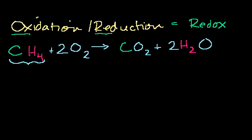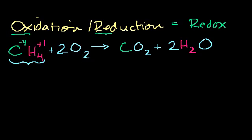So if carbon is the electron hog and hydrogen is having its electrons taken away — remember, this is all hypothetical, more of a partial reality — hydrogen is going to lose one electron each. So each hydrogen has an oxidation state of plus one. With four hydrogens each giving up an electron, the carbon must be taking four electrons, giving it an oxidation number of minus four. Now, what's the oxidation state of the oxygen bonded to itself? There's no reason to believe one oxygen should take electrons from another oxygen, so it has a zero oxidation state.